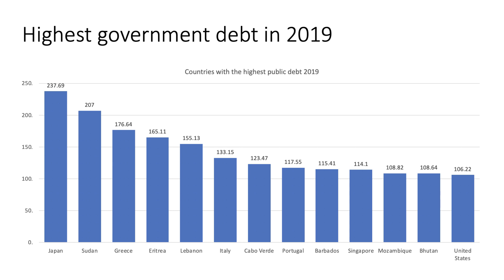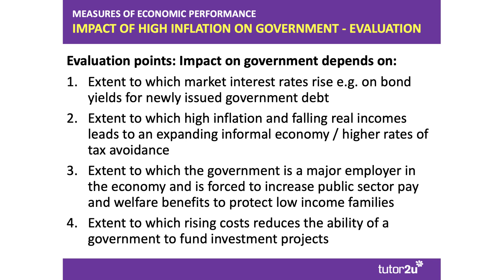This chart shows countries with the highest government debt in 2019. Japan comes top with a national debt of more than 230% of its GDP. Japan in recent times has been experiencing periodic price deflation — falling prices — and that increases the real value of Japanese debt, so part of Japan's economics is to increase inflation to 2% or more to help bring down the real value of outstanding government bonds. Countries like Sudan and Greece also have very high levels of government debt, and Greece has experienced deflation in recent times. All the countries shown have a national debt of more than 100% of GDP, including Italy at 133%, Singapore at 114%, and the United States.